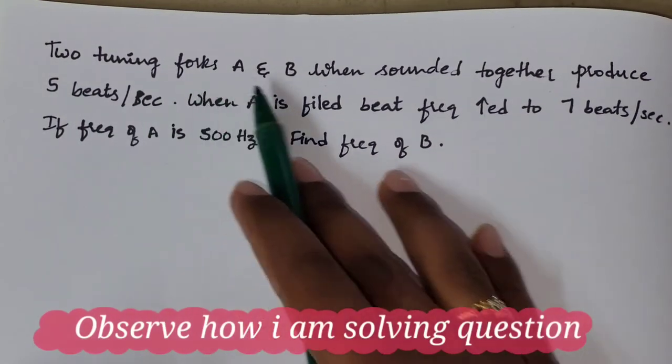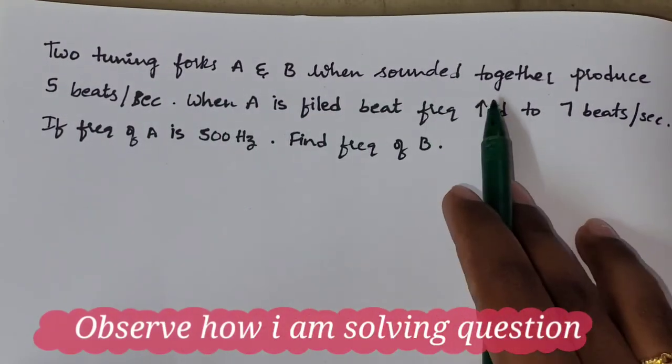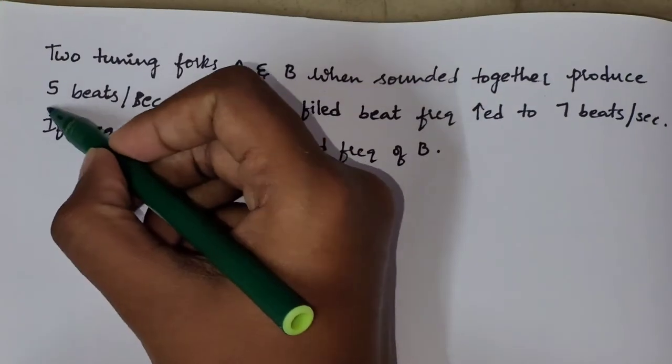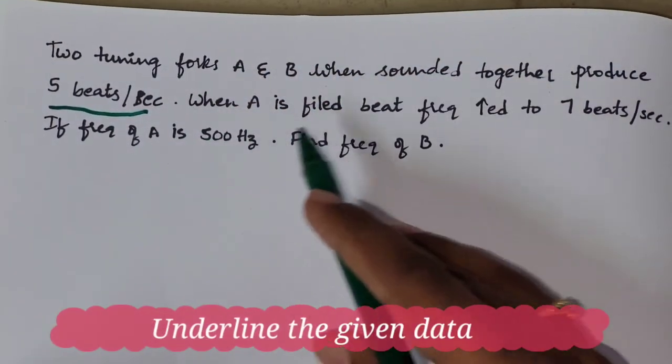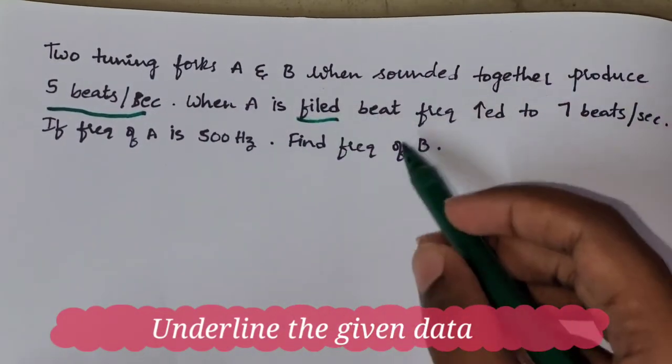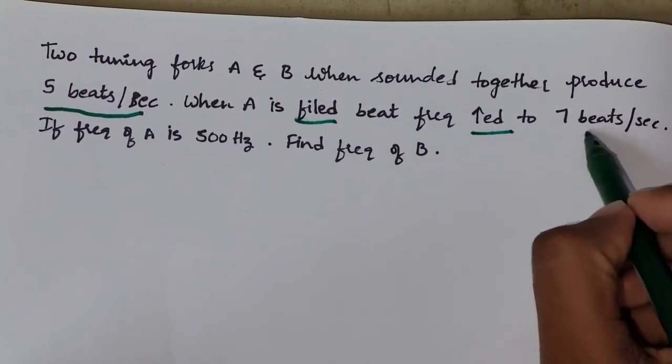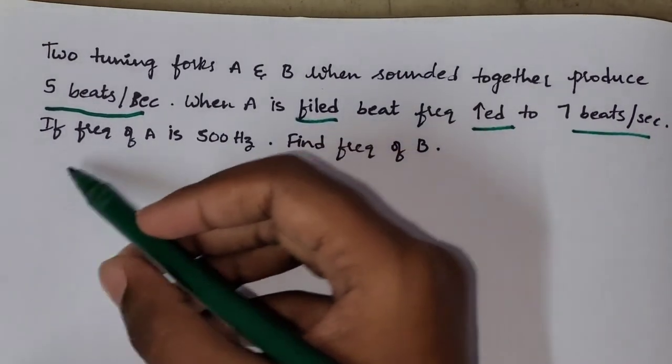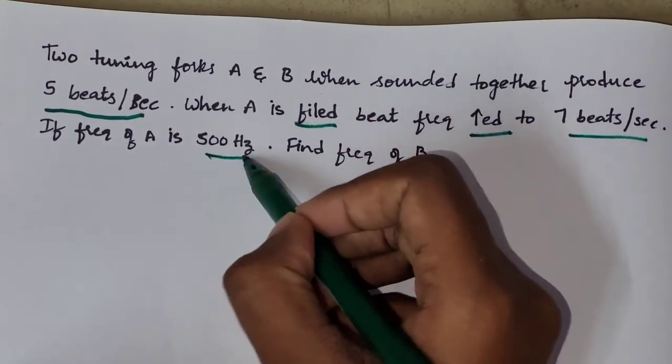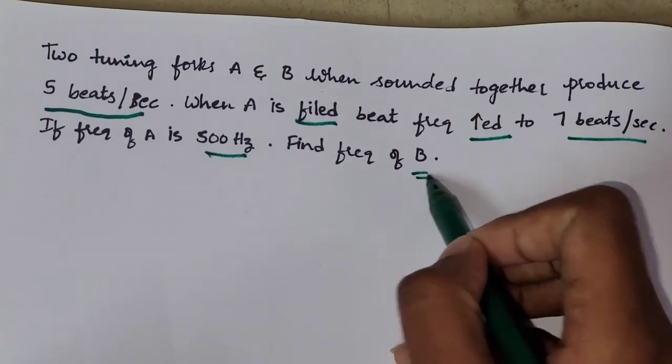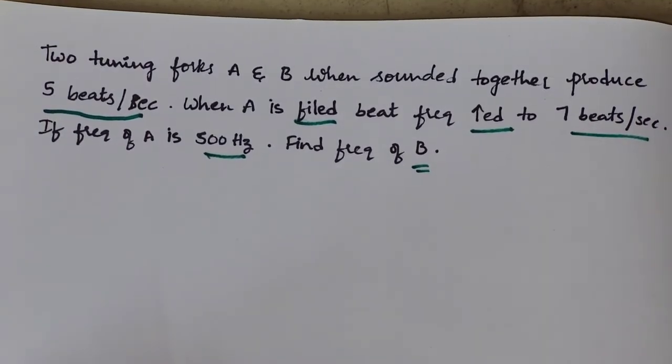Here is an example question to you. Two tuning forks A and B when sounded together produce 5 beats per second. When A is filed, beat frequency increased to 7 beats per second. If frequency of A is 500 Hz, find the frequency of B. So, let us see how to solve this question.